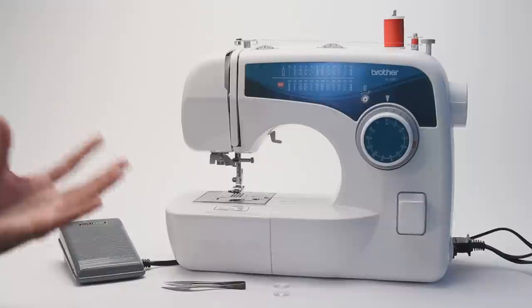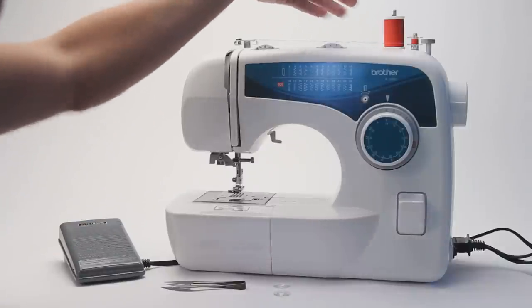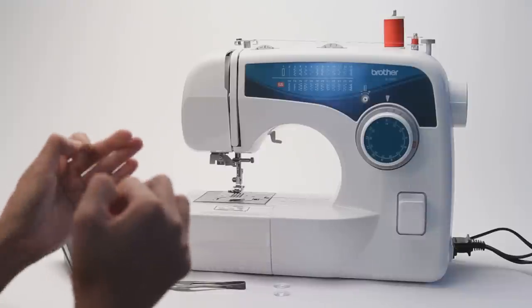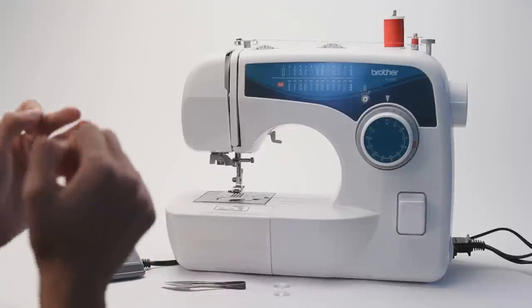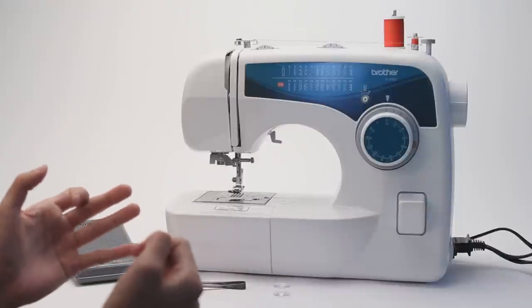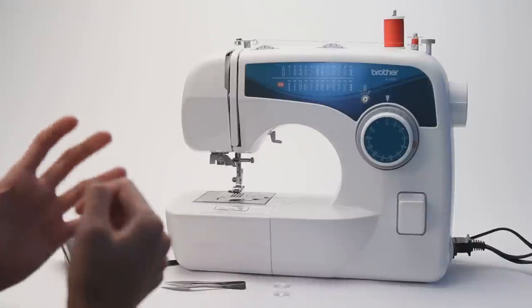Two things that you'll need to pick up in addition to that are of course your thread. I just picked a cotton general purpose thread, it's a little bit more elastic than any other types of thread. It washes well and it works fine for the purposes which is sewing labels on t-shirts.